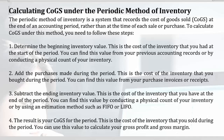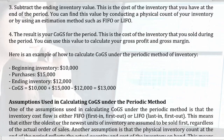Step three: subtract the ending inventory value — this is the cost of the inventory that you have at the end of the period. You can find this value by conducting a physical count or by using an estimation method such as FIFO or LIFO. Step four: the result is your COGS for the period — the cost of the inventory that you sold. You can use this value to calculate your gross profit and gross margin.